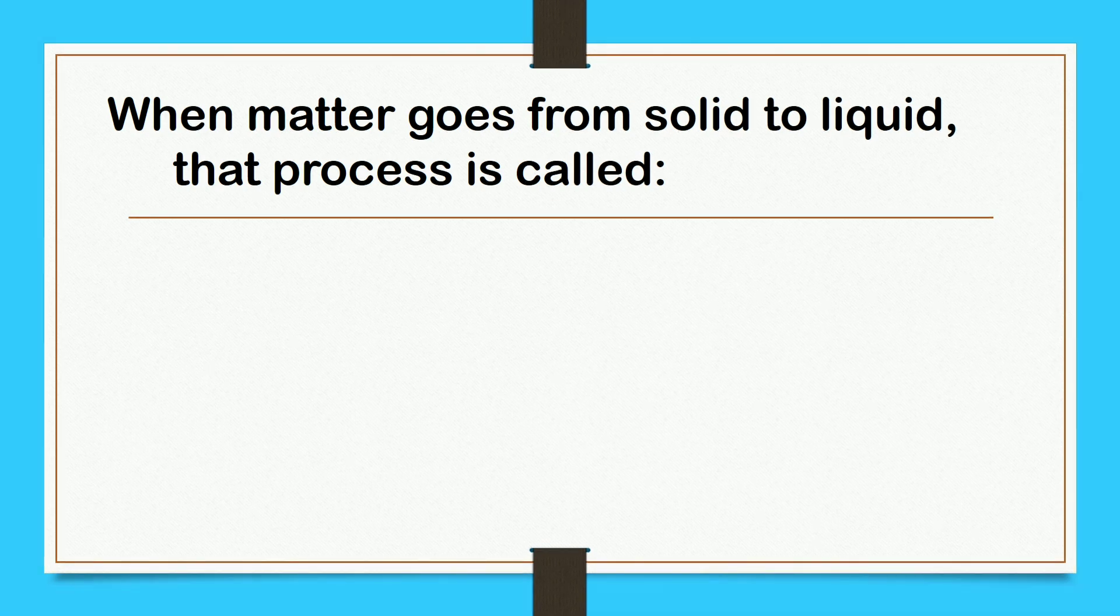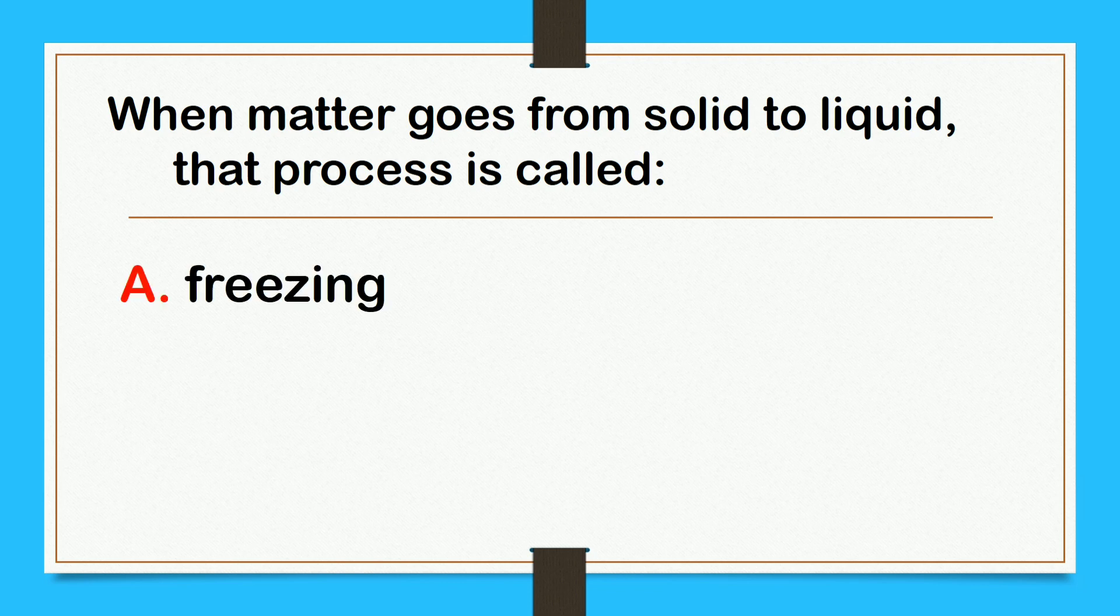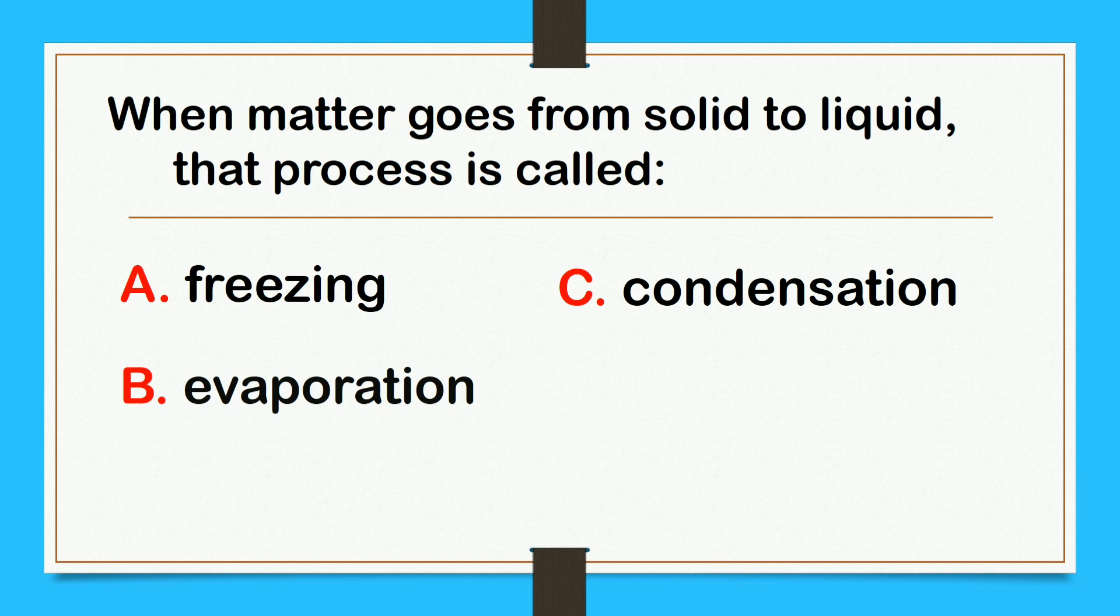When matter goes from solid to liquid, that process is called: letter A, freezing. B, evaporation. C, condensation. Or letter D, melting.